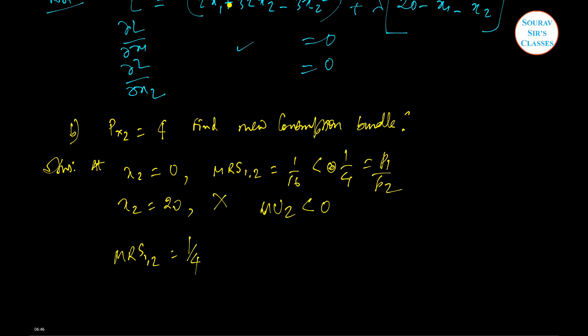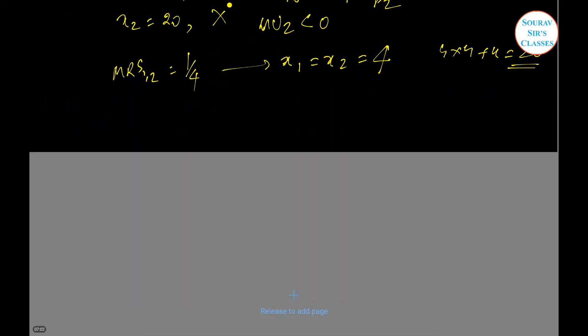Therefore the solution satisfies MRS equal to 1 by 4, that is the price ratio. Again by solving the previous way we will get that x1 equal to 16 and x2 equal to 4 units. So 4 times 4 plus 4, that is 20, will be the total income that is being consumed.